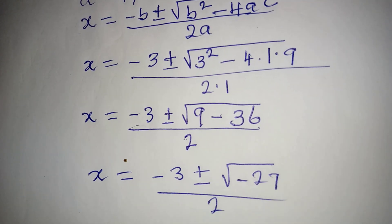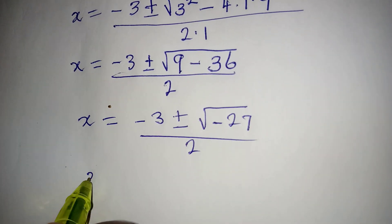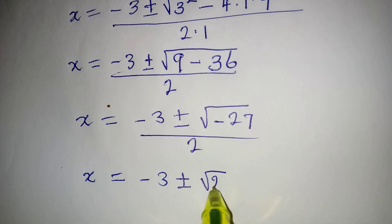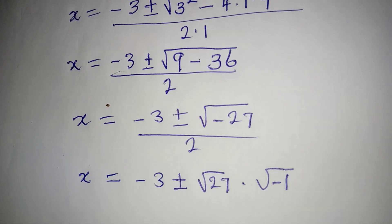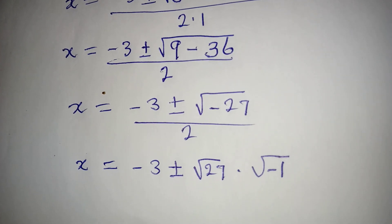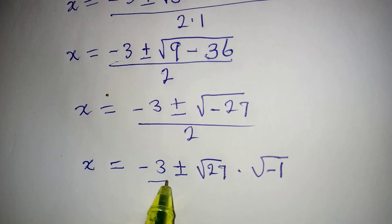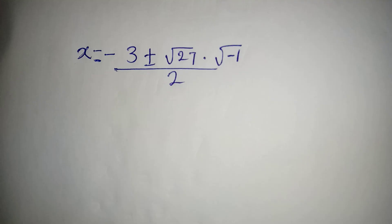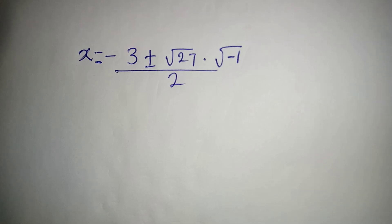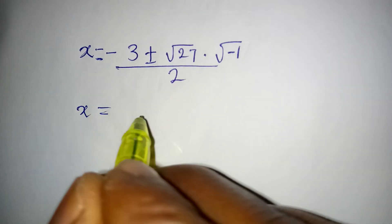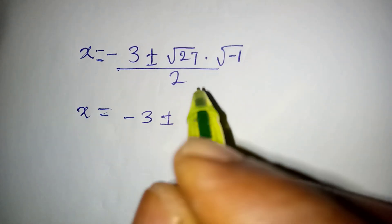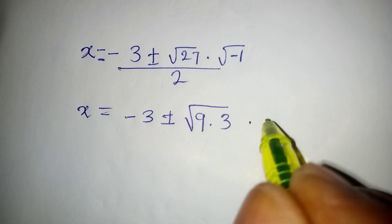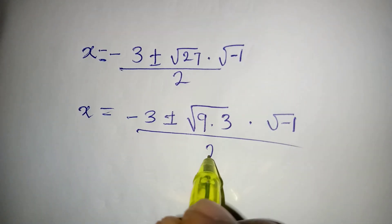To continue, x is equal to negative 3 plus or minus the square root of negative 27, all over 2. We need to bring out the negative, because we can't take the square root of negative 27 directly. So we write it as the square root of 27 multiplied by the square root of negative 1, all over 2. Now, 27 is the same as 9 times 3, then multiplied by square root of negative 1, all over 2.